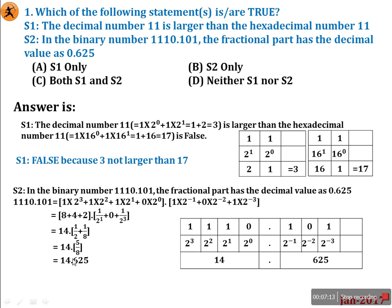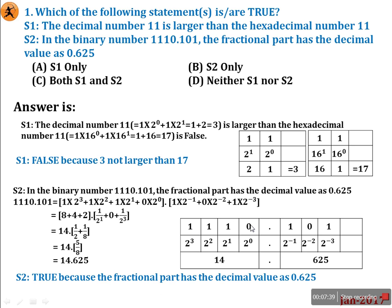S2 is true because after the decimal point the fractional part has decimal value 0.625. Now the shortcut method for the integer part: write 1110 with bases 2^0, 2^1, 2^2, 2^3. 0×2^0=0, 1×2^1=2, 1×2^2=4, 1×2^3=8. So 4+2=6, then 8+6=14.